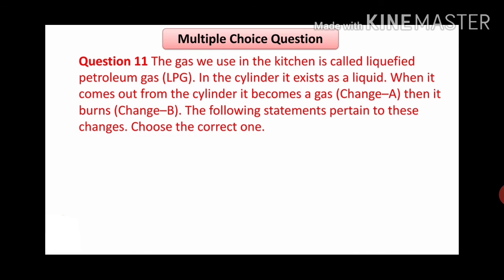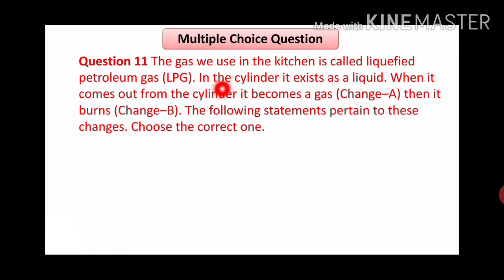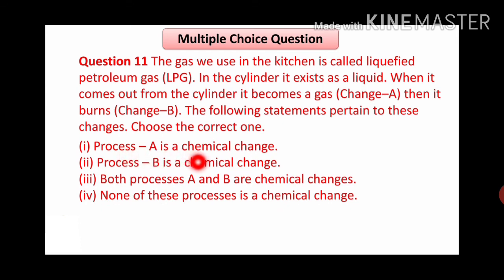Next: multiple choice question. The gas we use in the kitchen is called liquefied petroleum gas (LPG). In the cylinder it exists as a liquid. When it comes out from the cylinder, it becomes a gas - that is change A. Then it burns, which is change B. Choose the correct statement. Option 1: process A is a chemical change. Option 2: process B is a chemical change. Option 3: both process A and B are chemical changes. Option 4: none of these processes is a chemical change.